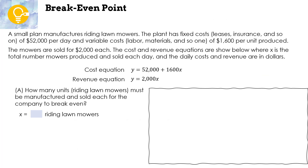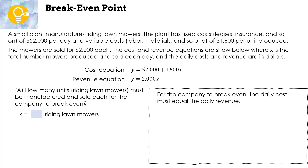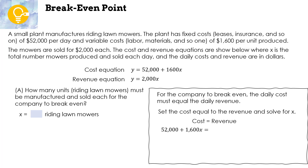This one's for you to try — pause the video, do it, then press play and we'll work it together. A small plant manufactures riding lawnmowers. The plant has fixed costs of $52,000 per day, and variable costs of $1,600 per unit produced. The mowers are sold for $2,000 each. X is the total number of mowers produced and sold each day. How many units must be manufactured and sold for the company to break even? Set cost equal to revenue: 52,000 + 1600x = 2000x.